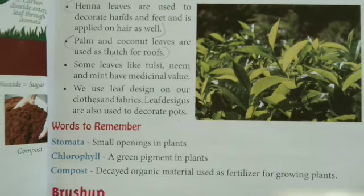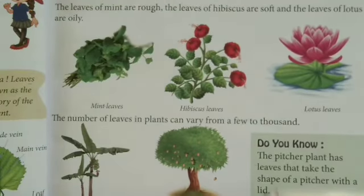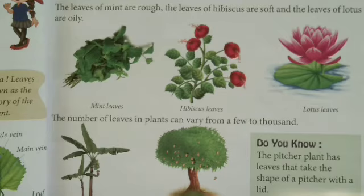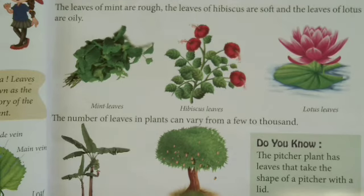Today we complete our chapter, Leaves Around Us. We saw how many uses leaves have. Banana trees have few leaves, while mango and neem trees have many. Different leaves have different smells. Some leaves are smooth, some are rough, and they mostly have different sizes — some are small and some are big.